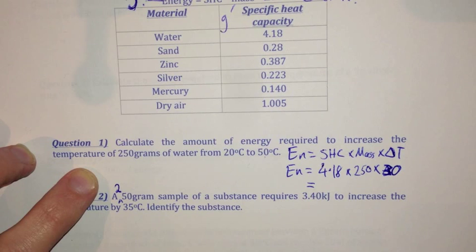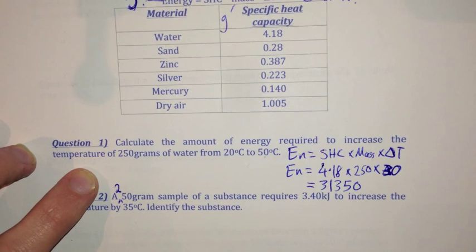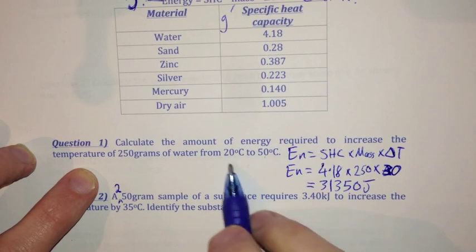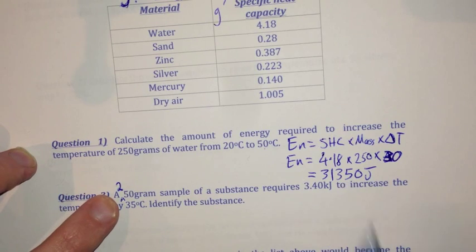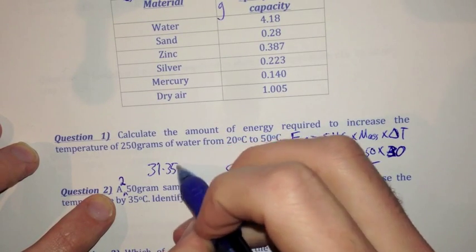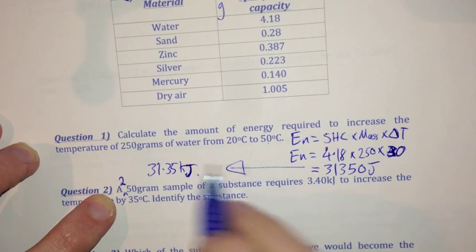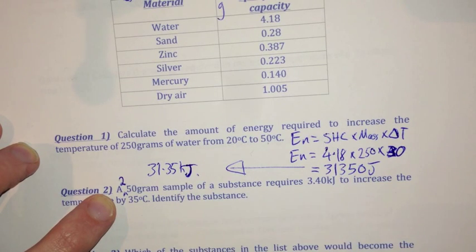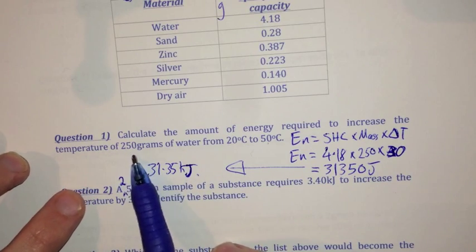All I need to do to calculate my energy is put this into a calculator: 4.18 times 250 times 30 equals 31,350. That's your amount of energy required to heat this amount of water by this much — this is in joules. I'm going to convert that into kilojoules by dividing by a thousand, so that's 31.35 kilojoules. One kilojoule is a thousand joules. It requires 31.35 kilojoules to increase the temperature of 250 grams of water by 30 degrees.